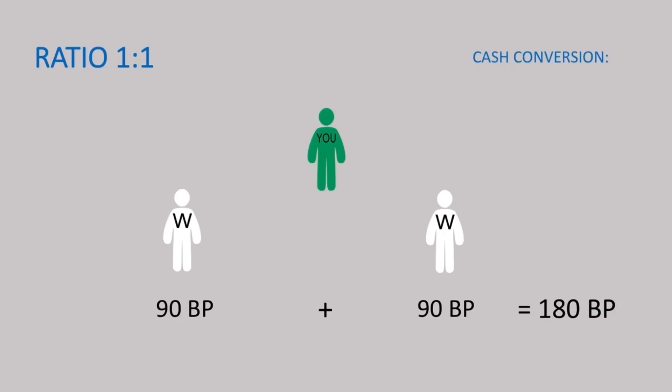How do you convert your binary points into cash? 180 binary points divided by 10 is equal to 18 euros.